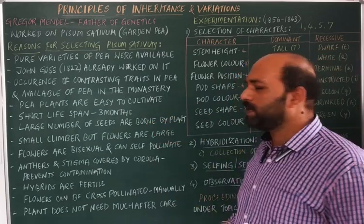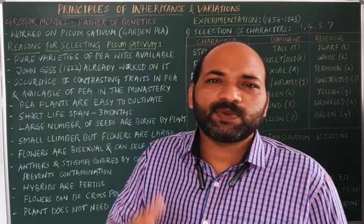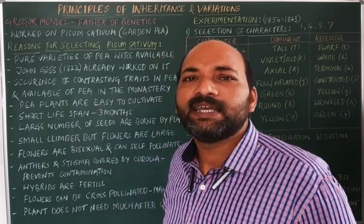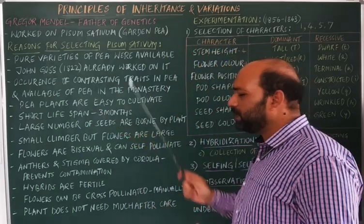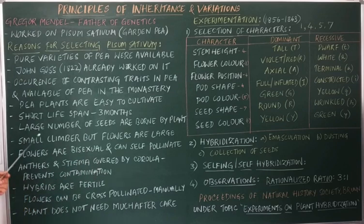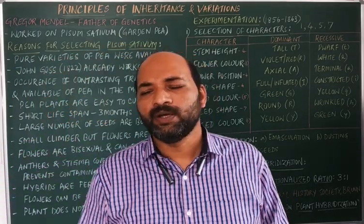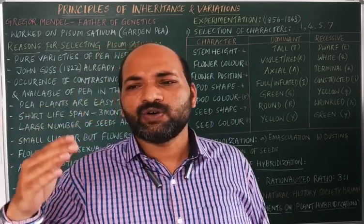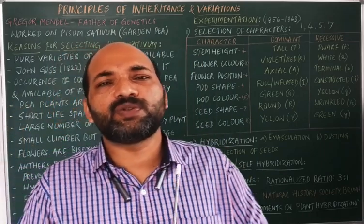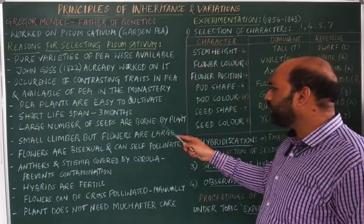Next is the occurrence of contrasting traits in the pea plant and its availability in the monastery. Mendel selected around 7 characters, or 14 traits, for his experiments — this plant had contrasting traits, making it suitable for experimentation. Pea plants are also easy to cultivate. Next, pea plants have a short lifespan. Whenever an experimental model has a short lifespan, results are obtained very soon — in a couple of months. Mendel got results within 3 months itself.